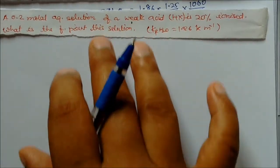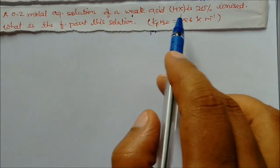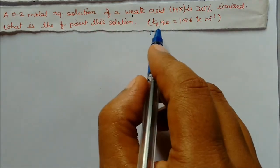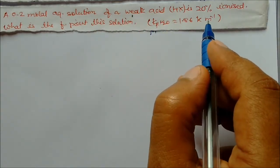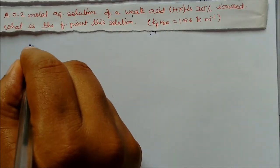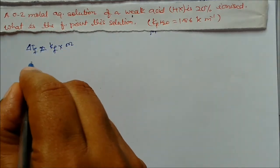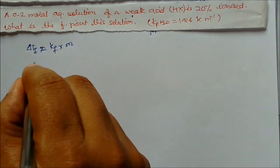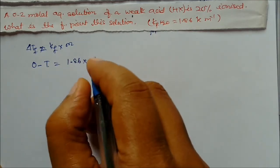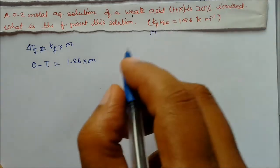Next problem: a 0.2 molar aqueous solution of weak acid HX is 20 percent ionized. What is the freezing point of this solution? Kf of water is 1.86 K per molality. Using delta Tf = Kf × molality: 0 minus T equals 1.86 multiplied by molality. Now, 20 percent ionized — what does this mean?